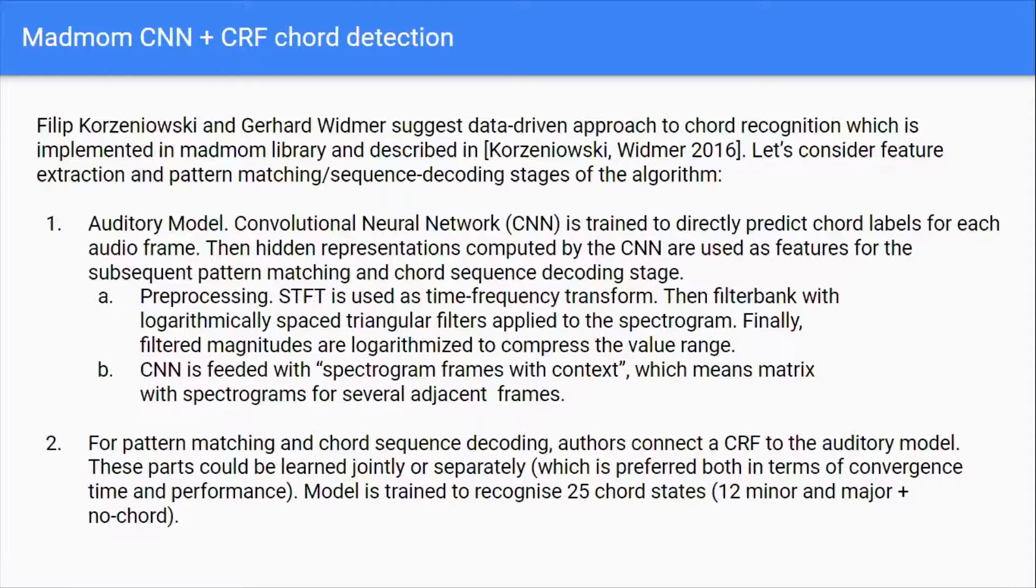The first step is the auditory model. CNN is trained to directly predict the chord labels for each audio frame. My audio input from mic or any sound file is broken up into frames. The hidden representations computed by CNN are used as features for subsequent pattern matching and chord sequence recording stage. In preprocessing, STFT is used as time-frequency transform, then a filter bank with logarithmic space triangular filters is applied to the spectrogram. Finally, filtered magnitudes are logarithmized to compress the value range.